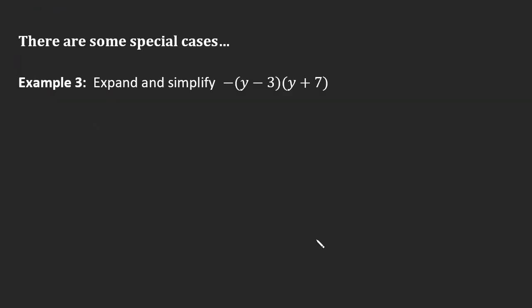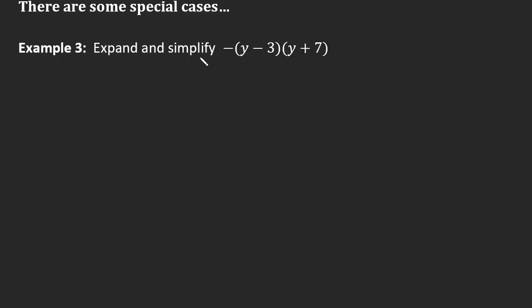Alright, now as with most things in mathematics, there are some special cases that we're going to have to take a look at. For example, in this example three here, we've been asked to expand and simplify this binomial times a binomial, but there's a negative outside the front here. So sometimes there'll be numbers outside the front, and when there's a negative outside in front here, effectively that's a negative 1. So we can look at that value and say okay, that's a negative 1 right there. It could be a 7. It could be a 3. It could be a negative 18. It really doesn't matter.